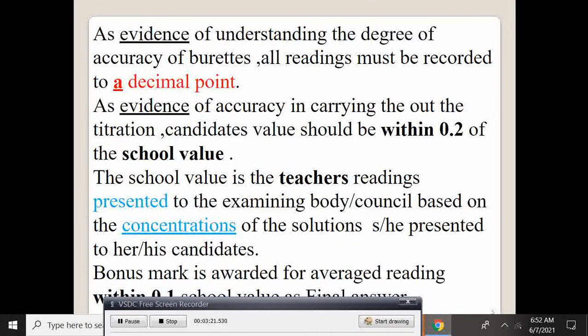Now, as evidence of understanding the degree of accuracy of burette, all readings must be recorded to a decimal point. And the decimal point that is recognized is within 0.2 of the school value.